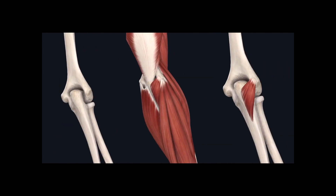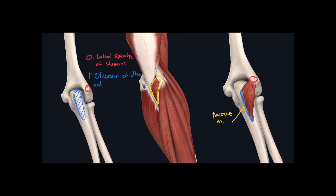The last muscle we're going to discuss is the anconeus muscle. It's located on the posterior aspect of the humerus and connects to the ulna. The origin for this muscle is the lateral epicondyle of the humerus. The insertion starts at the proximal end of the ulna and extends partly down the body — specifically the olecranon and adjacent body of the ulna. When this muscle contracts, it extends the elbow joint.